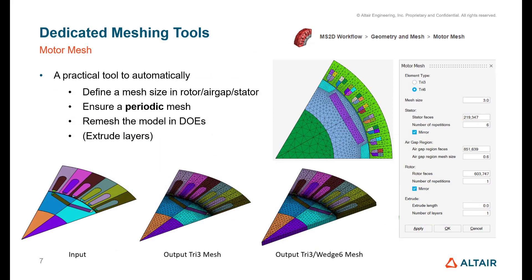For some applications we have very specific tools. In particular for motor applications we have something called the motor mesh. It will ask you to define the mesh in the rotor, air gap, and stator sides. That way you can ensure the mesh will be periodic and nice. This is also a way to make sure the model will be remeshed automatically when you do DOE, so in the solution you define your CAD and mesh settings, and these can be the motor mesh inputs.